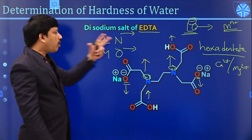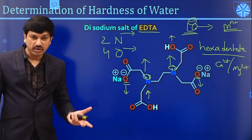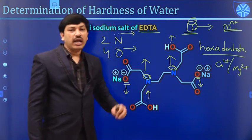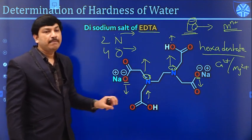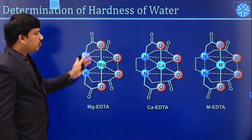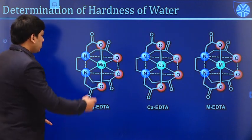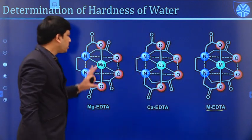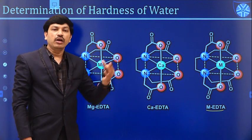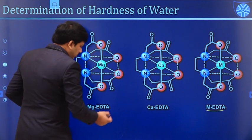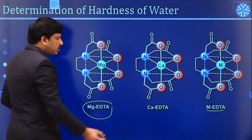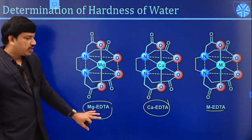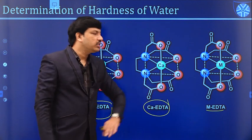EDTA can form complexes with metal ions like Ca²⁺ or Mg²⁺ in water. Water gets its hardness mainly from calcium and magnesium salts. When EDTA is added to a water sample, it identifies calcium and magnesium ions and forms metal-EDTA complexes. These are the structures of the magnesium-EDTA or calcium-EDTA complexes — and in general, this is the metal-EDTA structure.